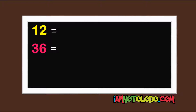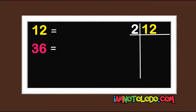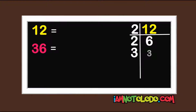The easiest way to find the HCF of 12 and 36 is like this. Write your 12: 2 in 12 is 6, 2 in 6 is 3, and 3 in 3 is 1.